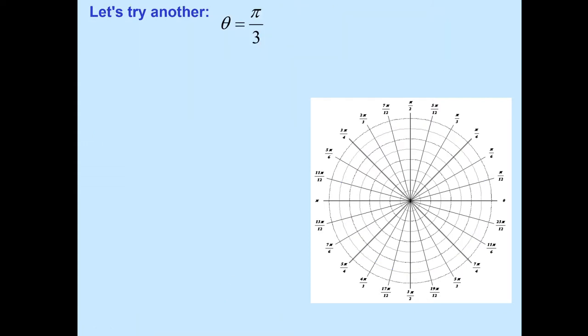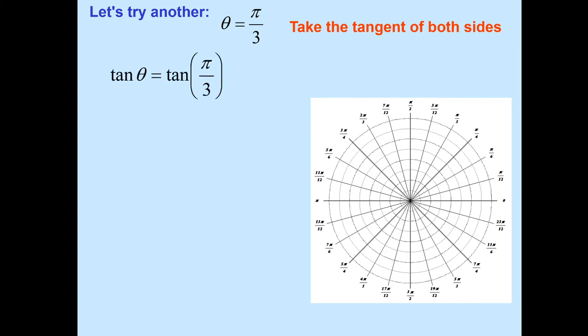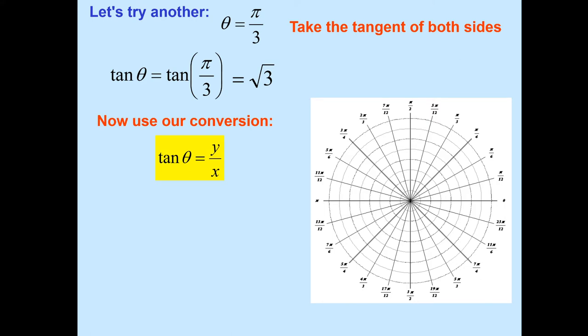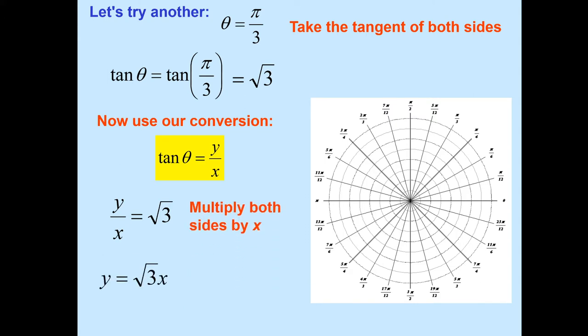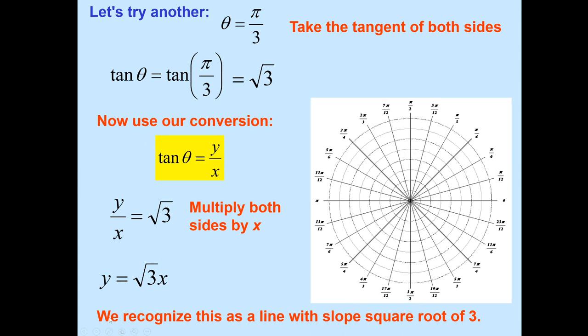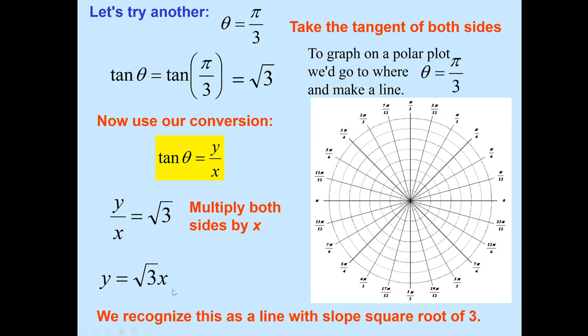Let's try another one: theta equals pi over 3. So tangent of pi over 3 is the square root of 3. From the last lecture, section 8.1, tangent of theta is y over x — opposite over adjacent in the xy coordinate. So y over x equals root 3, giving us y equals root 3 times x. Cross-multiplying gives a linear equation — we're going back to algebra 1. We recognize this as a line with slope square root of 3. So in polar coordinates, that direction is pi over 3, and we draw a straight line through the origin going to infinity.